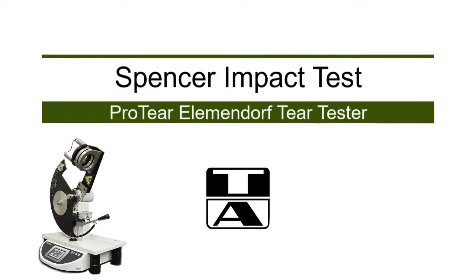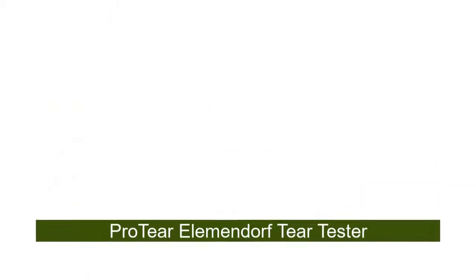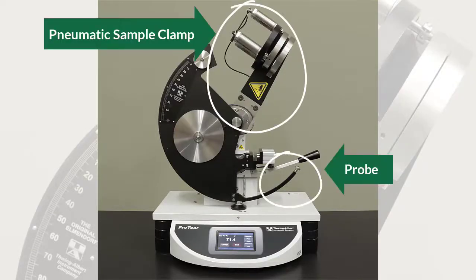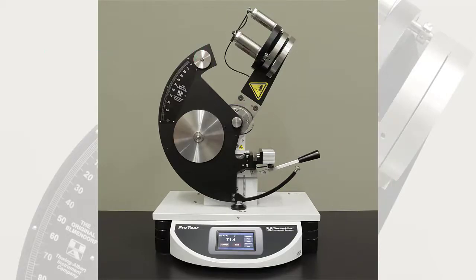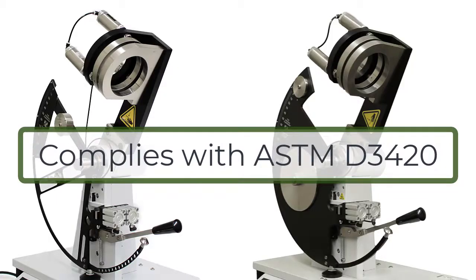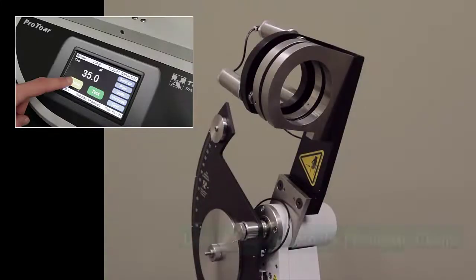The Spencer impact attachment was designed for use on the Protair Elmendorf tester. When configured with the pneumatic clamp and probe, it complies with ASTM D3420. This test is used to determine the impact resistance of plastic films and packaging materials.